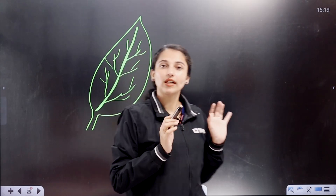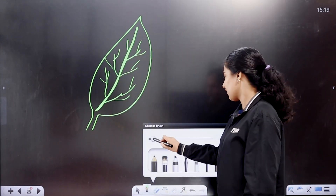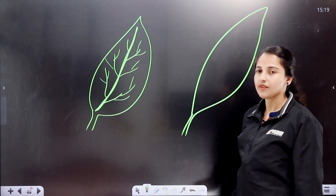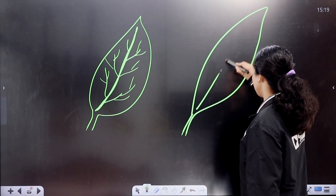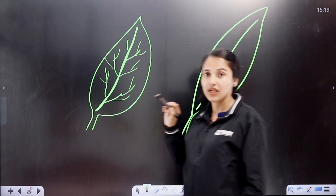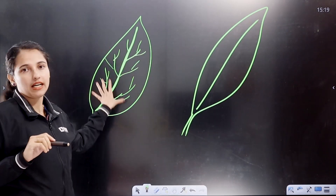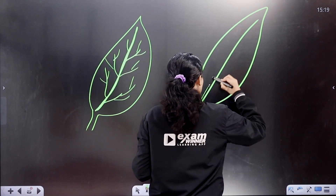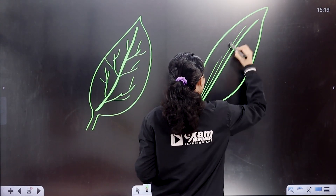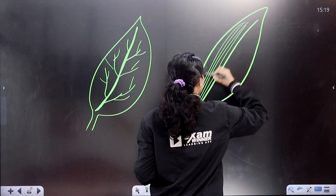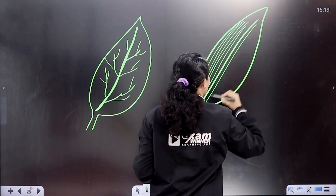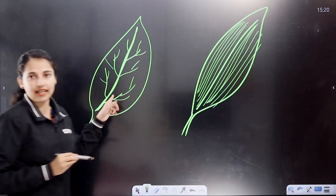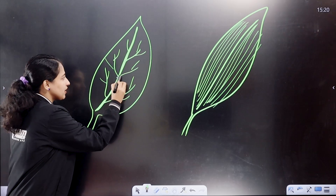We have a dicot leaf and a monocot leaf. In the monocot leaf, there is a thin vein in the middle. The veins are of almost equal size in the monocot leaf.